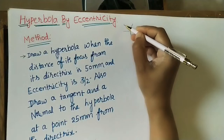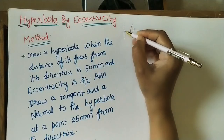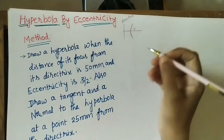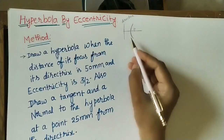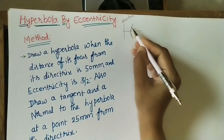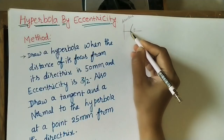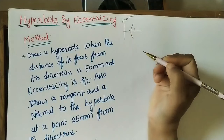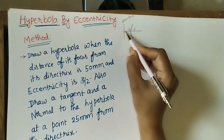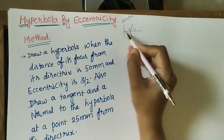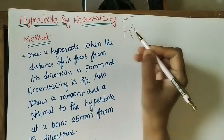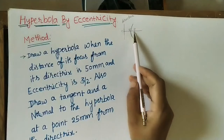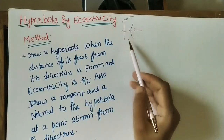It has one fixed straight line called the directrix. It also has one point on the curve on the axis — this point we call V, and the intersection point of this axis line and the directrix is called C. These are the important points in the hyperbola.